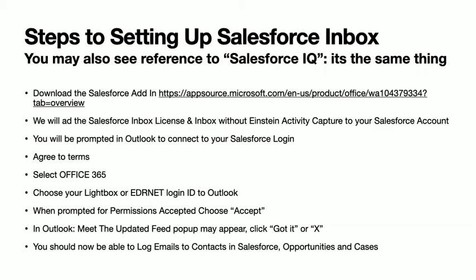You will be prompted to connect to your Salesforce login. It'll ask you to agree to terms, which you will do. You will select Office 365 as opposed to Exchange — you'll see two options. Choose your LightboxRE or EDRNet Outlook identification — so whatever email identity you log in with. Some people have an EDRNet mailbox username even though they have a LightboxRE.com address, so it's either one of those two.